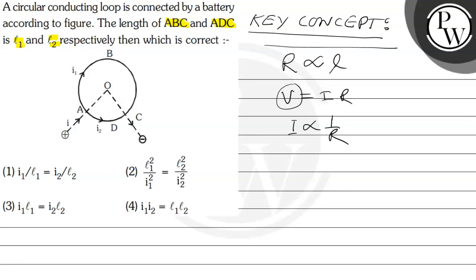If we combine these two, one is this, another is this. If we combine, we can write that current is inversely proportional to L.